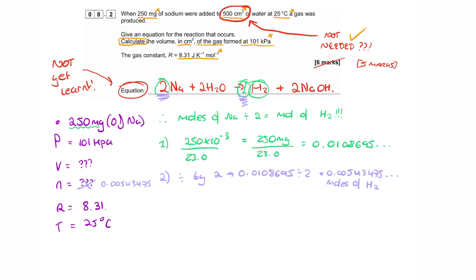Pressure has been given in kilopascals, and we need to turn that into pascals. So 101 times 1,000, 101,000 pascals. Temperature has also been given in Celsius. We need to convert that into Kelvin. Temperature, like I said, you have to remember the conversion, unfortunately. Add 273 to get 298 Kelvin.